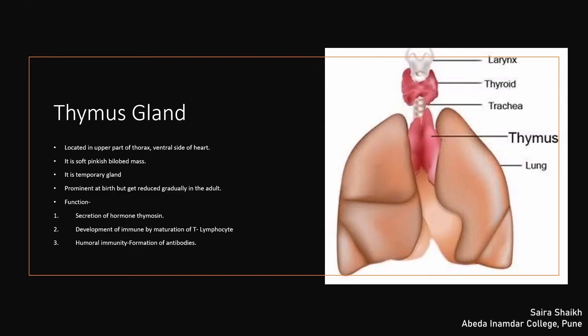The next endocrine gland is the thymus gland, located in the upper part of the thorax on the ventral side of the heart. It is soft, pinkish, and a bilobed mass. This gland is a temporary gland — in old age its size is reduced. It secretes the hormone thymocin. The thymus gland plays a very important role in the development of the immune system and the maturation of T-lymphocytes. It also promotes the formation of antibodies, which are soldier cells produced when antigens are present in the body.